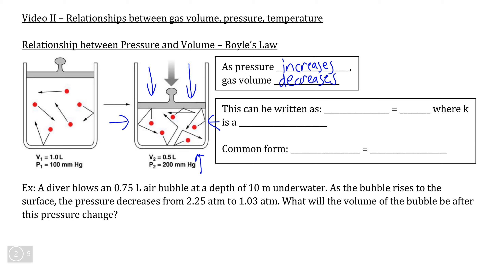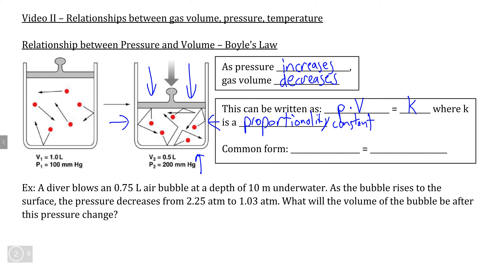This means that gas pressure and gas volume have an inverse relationship with one another, which we can show by saying that the pressure of a gas multiplied by the volume of a gas is equal to K, a proportionality constant. This shows that no matter what the pressure is, the volume is always going to change inversely relative to what this constant is.